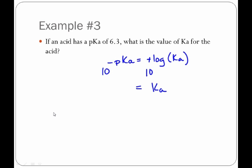10 raised to the log of something always becomes that something, so we essentially get rid of the log function. On the other side, we have 10 raised to the negative pKa, which equals Ka. Now I just plug in my 6.3 and put it into my calculator, and we get that Ka equals 5.0 times 10 to the negative 7.